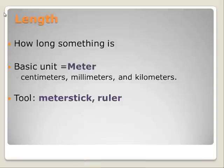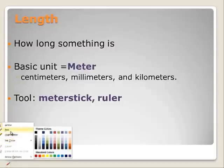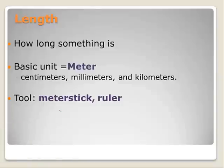There are different measurements. The first one is length. The basic unit in the metric system is the meter, but you can add prefixes such as centimeters, millimeters, and kilometers. The tools we use for that are the meter stick and the ruler, and some other ones to measure larger distances.